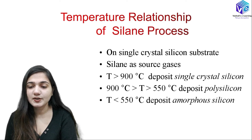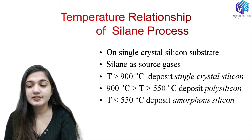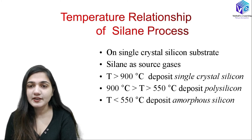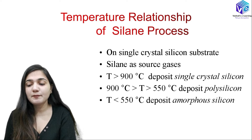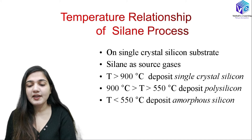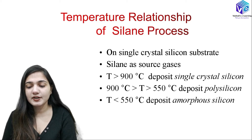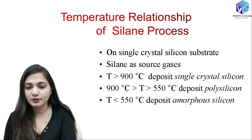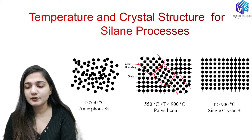Coming to the temperature relationship of the silane process — if I change the temperature, I get different outputs. On a single crystal silicon substrate using silane as a source gas: if the temperature is greater than 900°C (like 1000°C in the first case), we deposit a single crystal silicon layer. When the temperature is between 550 to 900°C, we deposit a polysilicon layer. When the temperature is less than 550°C, we deposit an amorphous silicon layer. So by simply changing the temperature, we get different types of silicon layer growth.